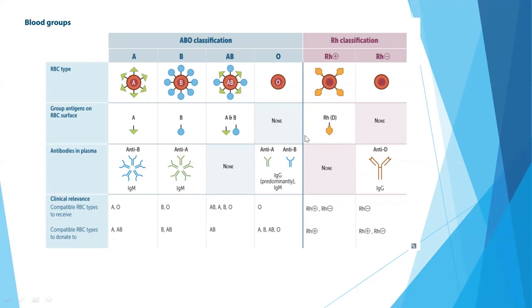The Rh classification: Rh positive means the D antigen is present on the RBC surface; Rh negative means it is absent. Rh positive individuals have no antibodies against the D antigen, while Rh negative individuals have anti-D antibodies. An Rh positive patient can receive both Rh positive and Rh negative blood — Rh negative blood contains no D antigen so it won't cross-react. However, an Rh negative patient can only receive Rh negative blood, because if they receive Rh positive blood, the D antigen will cross-react with anti-D antibodies and cause a reaction.